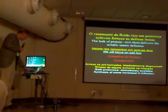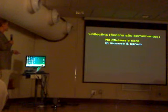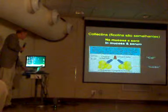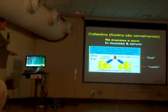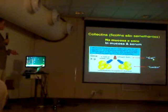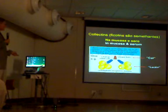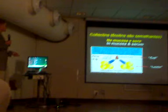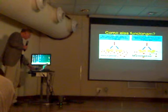Collectins and ficulins are similar proteins found in the mucosa and also in the serum, and their synthesis can be increased during infection. The mannose-binding lectin is one example of a collectin: at one end it has a collagen helix — which is where the 'col' comes from — and at the other end it has lectin domains. A lectin is a protein that binds carbohydrates, and mannose-binding lectin has six such carbohydrate-binding heads.